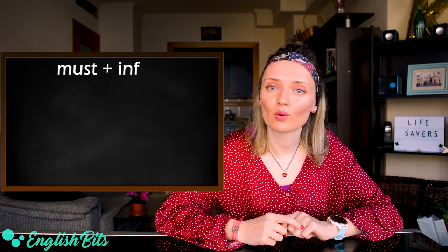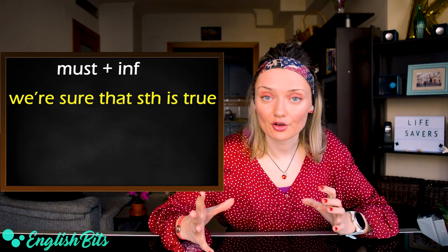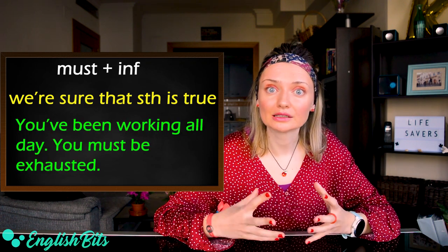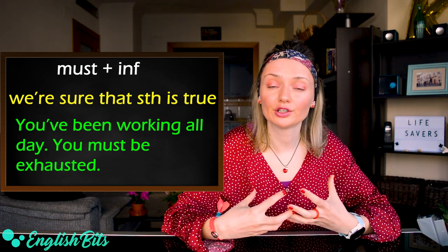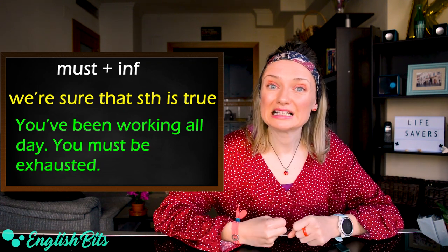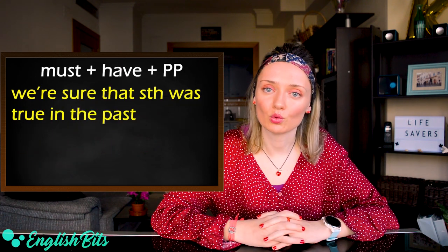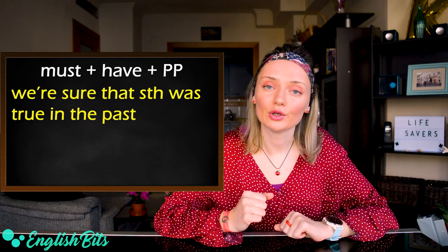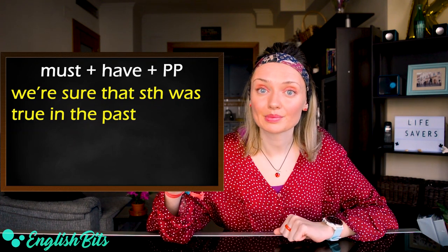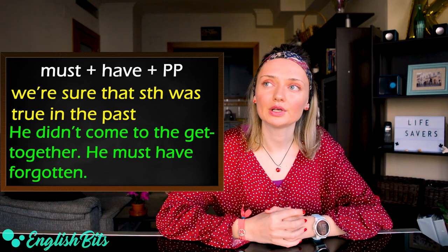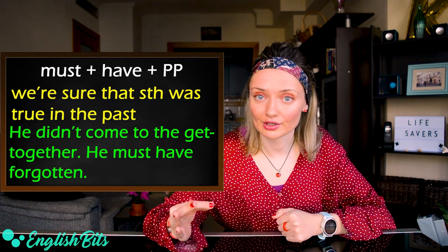The first modal verb that you can use is 'must + infinitive.' We use it when we are sure that something is true. For example: you've been working all day — you must be exhausted, so we are sure that the person is exhausted. And if we are sure that something was true in the past, we use 'must + have + past participle.' For example: he didn't come to the get-together — he must have forgotten.